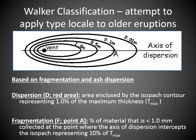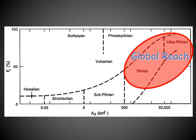You then plot these values on a graph — the area enclosed by 1% of maximum thickness on the bottom axis, going up to 50,000 or more square kilometers for Ultra-Plinian types. Fragmentation goes from zero to 100%. Comparing to modern eruptions, Plinian and Ultra-Plinian cover huge areas and are super-pulverized. Hawaii has the most limited dispersion and least fragmentation. Ultra-Plinian has the most of both.